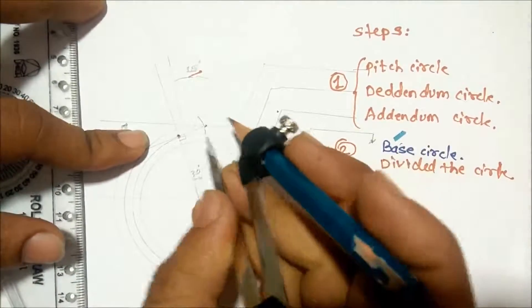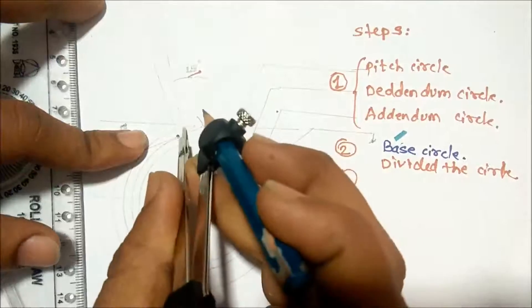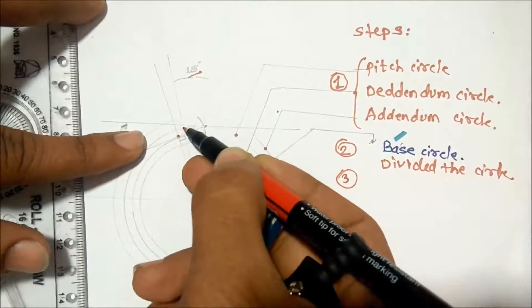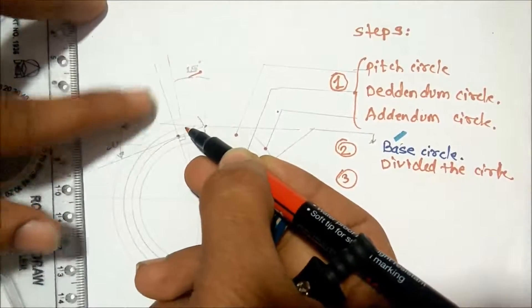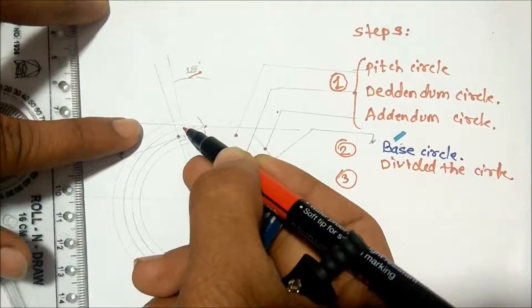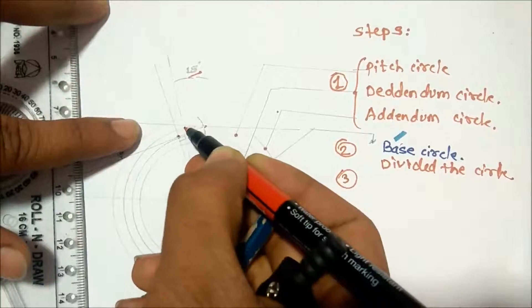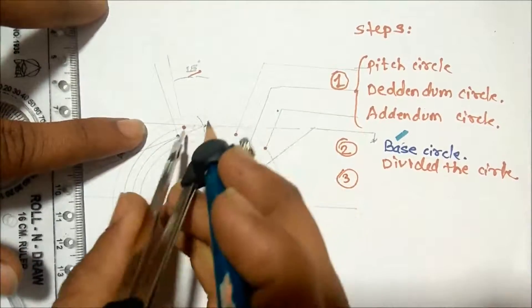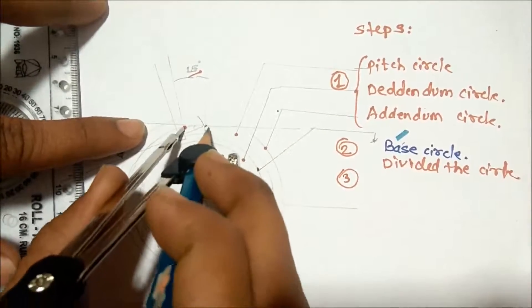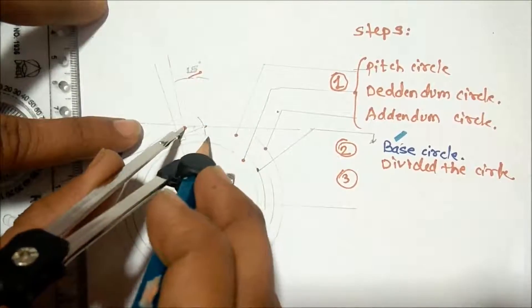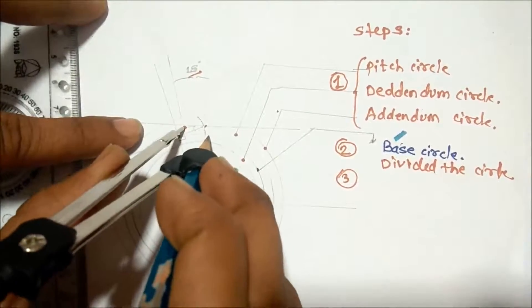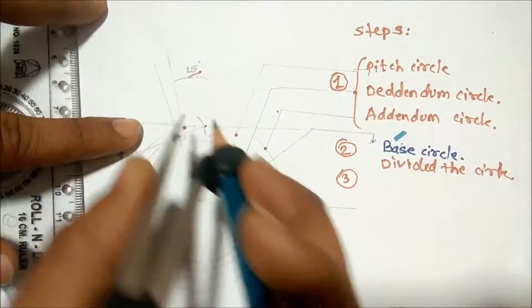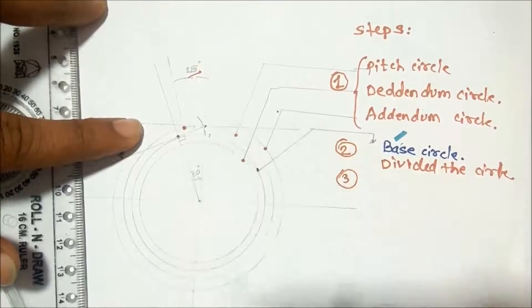Place the compass nib on the pitch circle where the pitch circle and the division line intersect. Take that distance and place the compass nib on the base circle, then mark a small arc on the base circle.